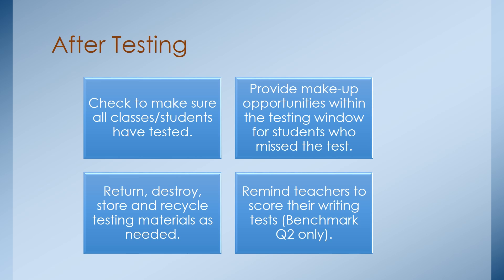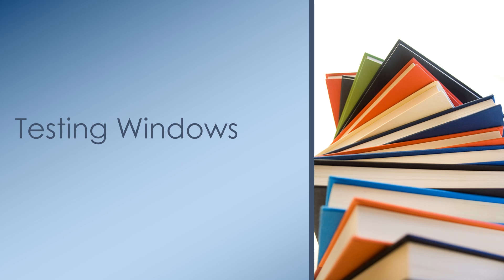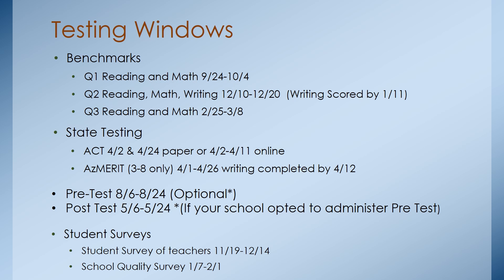Quarter 2 benchmark tests will include a writing portion. The student's writing will be scored by your school. It will be important to develop a plan for scoring and make sure all scoring is completed by the end of the scoring window. The testing window dates are listed on the district assessment calendar, but we have also listed them here for quick reference. Benchmark tests will be held for quarters 1, 2, and 3. State testing will start in April. Schools that opted to administer district pre-tests have already started, and post-tests will take place in May. Pre- and post-tests are optional, and in addition to benchmarks and state testing. If you are supporting the student surveys, they start in November and January. Make sure to keep up on all of these dates, as testing windows are hard deadlines. Once the window is closed, it cannot be reopened.